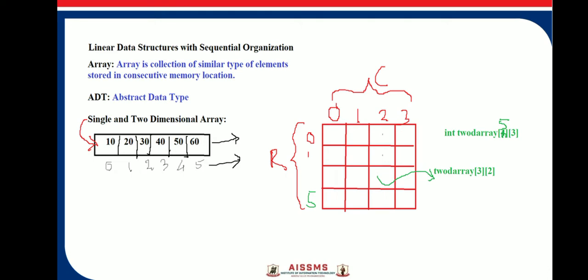Elements are stored in consecutive memory locations. For example, if we want to store names of students in a class, we can make use of an array to store the names in sequential form. Simply put, an array is a set of consecutive memory locations which contains similar data elements.